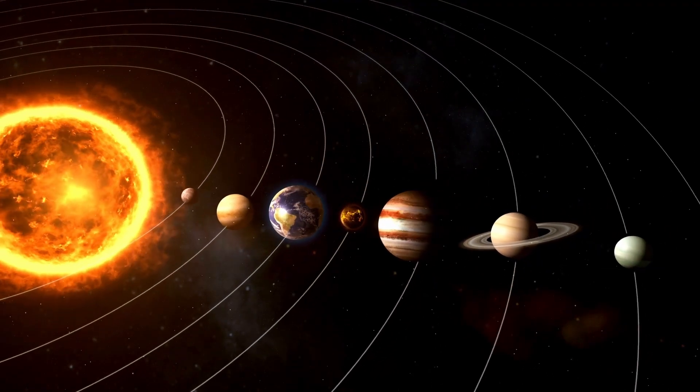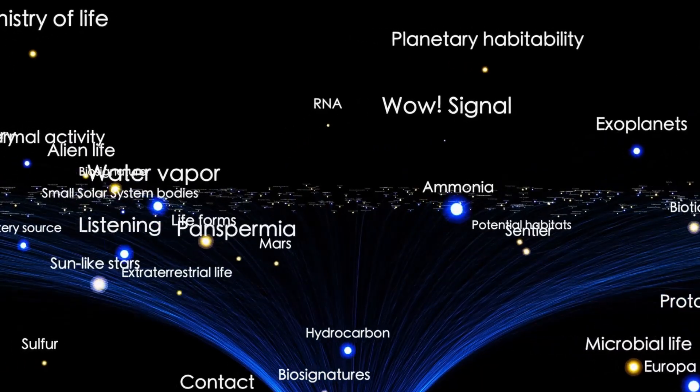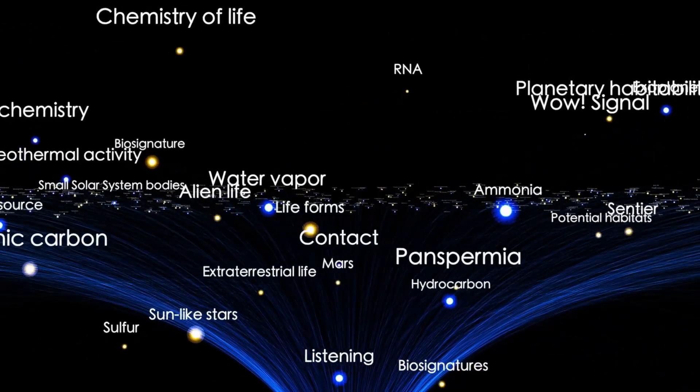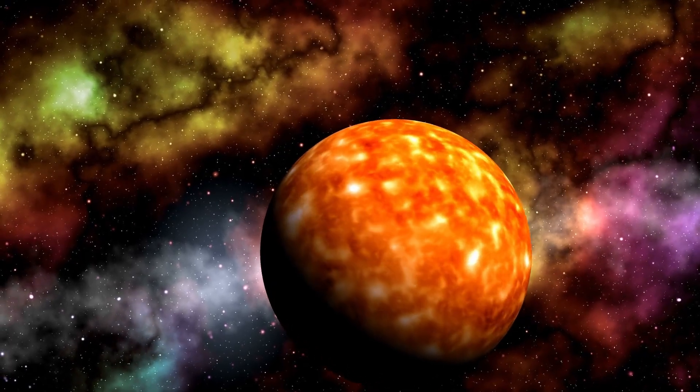Why? Because CO2 sublimates at much lower temperatures than water ice, suggesting this object formed in an extremely cold region, well beyond the frost line of its parent star system.